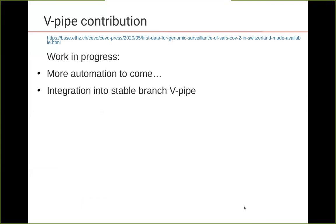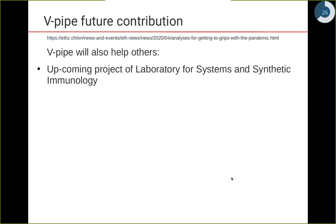This is currently a work in progress. We're going to increase the level of automation to process even more samples as new positives come in. The quality checks you saw are going to be merged into the stable branch of the pipeline and made available in the coming days. We're also going to work with the Laboratory of Systems and Synthetic Immunology at CyReady at some point in the future.